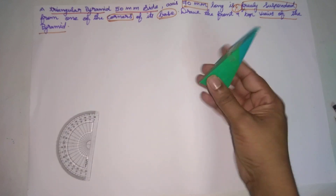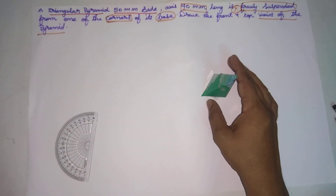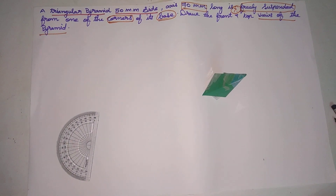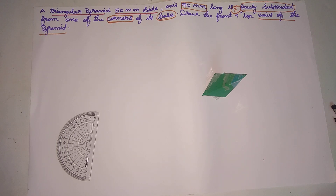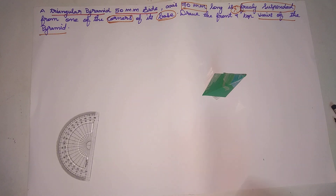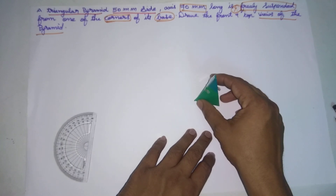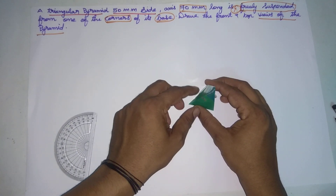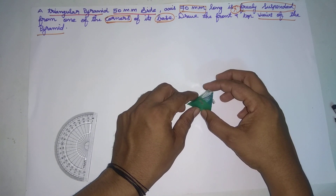If you have any problem with the triangular prism — the triangular prism is resting on the HP. So now we will consider the HP rest. This is the HP at rest, and here is the corner.